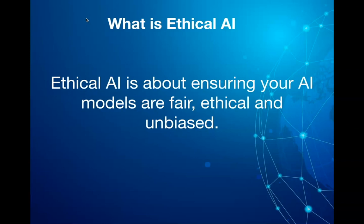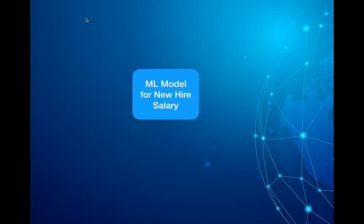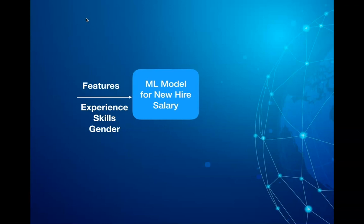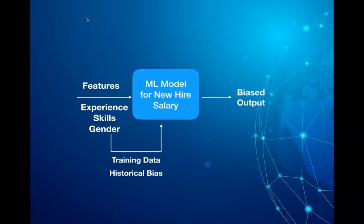Let's first understand how this bias gets into the AI model. Let's assume you are building an AI model which provides salary suggestions for new hires. As part of building the model you have taken gender as one of the features, and you are using those features along with other features to suggest salary. This model is trying to discriminate salary based on gender. In the past, bias has been introduced through various human judgments and social and economical factors, but if you include this bias as part of the new model, the model will start discriminating salary based on gender. The whole idea is to build a model which is not biased and suggests salary based on people's experience and merits.